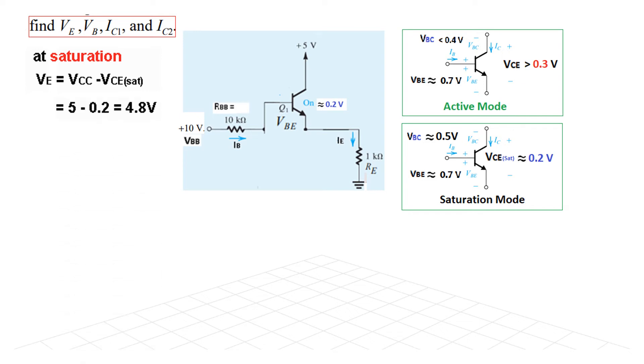And now from here, VE is VCC minus VCE saturation, 5 minus 0.2. So VE is 4.8 volt. So this voltage here, VE is 4.8 volt.